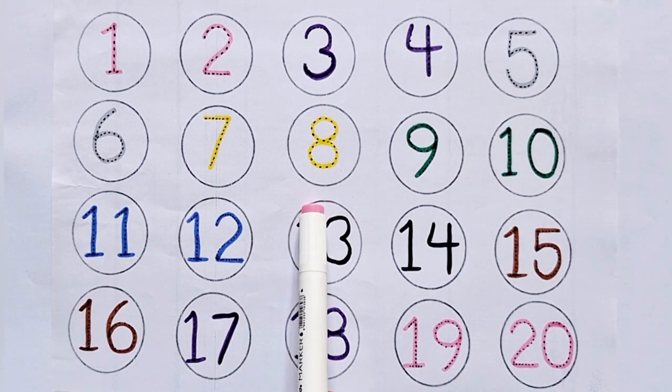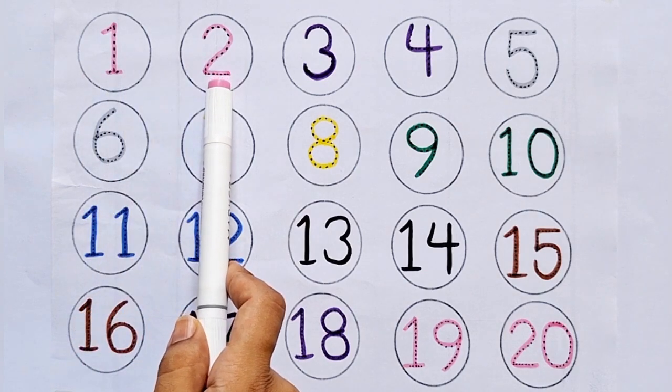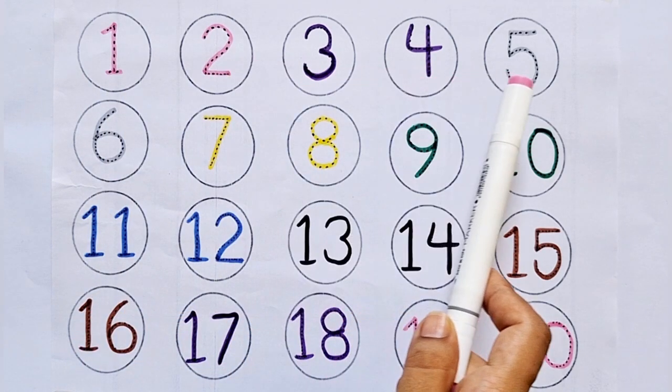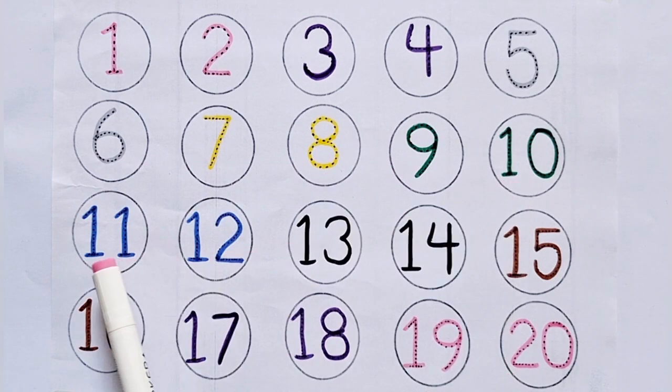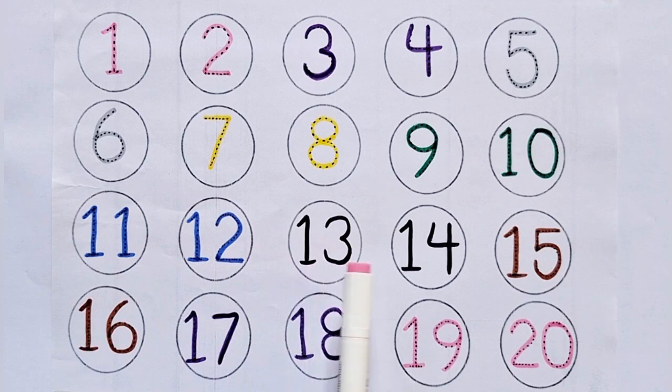Let's again learn counting from 1 to 20: 1, 2, 3, 4, 5, 6, 7, 8, 9, 10, 11, 12, 13, 14, 15, 16, 17, 18, 19, 20.